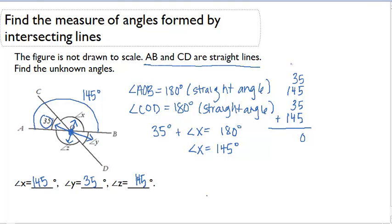I get 0, carry the 2, 5, 9, 12 plus 6 is 16, carry the 1, and 3. I get 360, which is correct. That means that angle X is indeed 145 degrees as is angle Z and angle Y is 35 degrees.